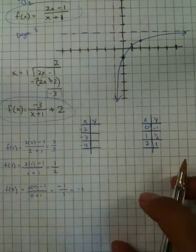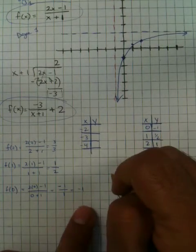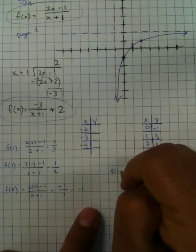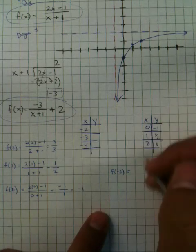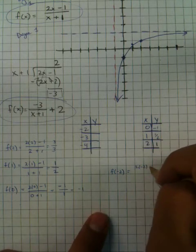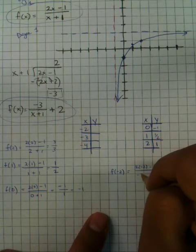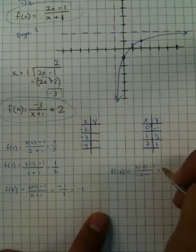All right, let's keep continuing with our math. Let's do these other inputs and outputs. If I use negative 2, what's going to happen is I'll get 2 times negative 2 minus 1, all over negative 2 plus 1, which would be negative 4 minus 1, negative 5, all over negative 1, which is 5.